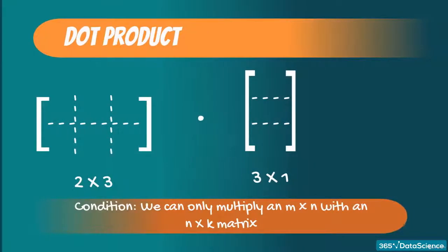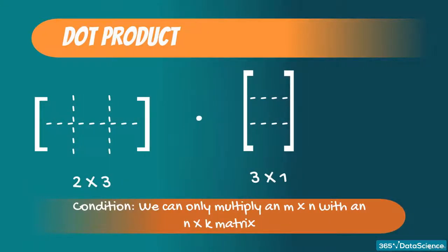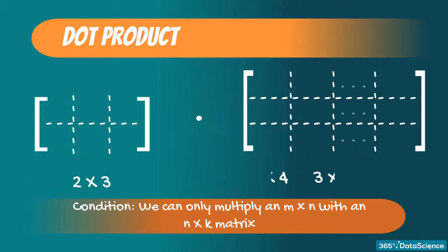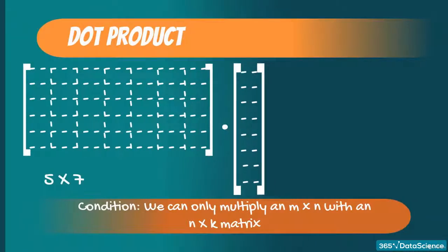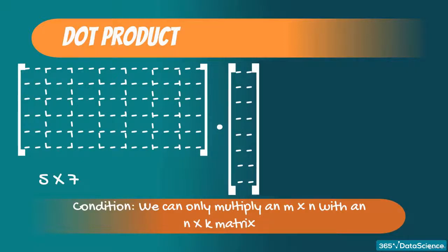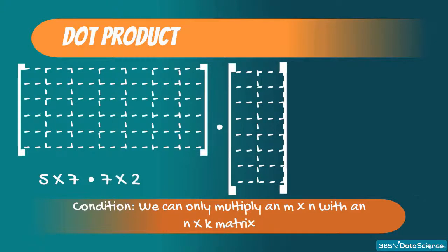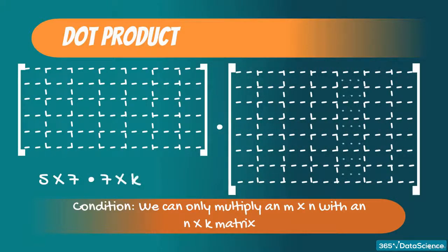So, we can multiply a 2 by 3 matrix with a 3 by 1 matrix. Actually, we can multiply it by a 3 by 2, 3 by 3, 3 by 4, and so on, until 3 by k matrix. Similarly, if I want to multiply a 5 by 7 matrix, compatible matrices for multiplication are 7 by 1, 7 by 2, 7 by 7, and so on.